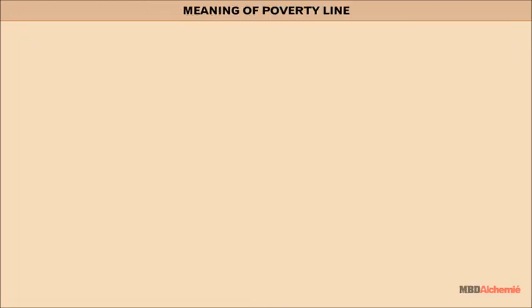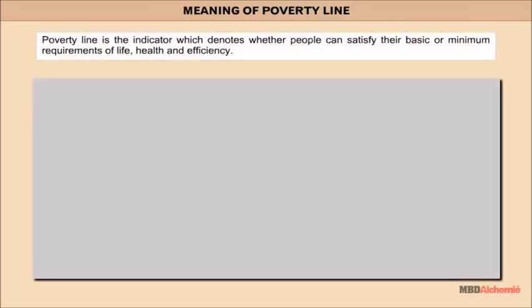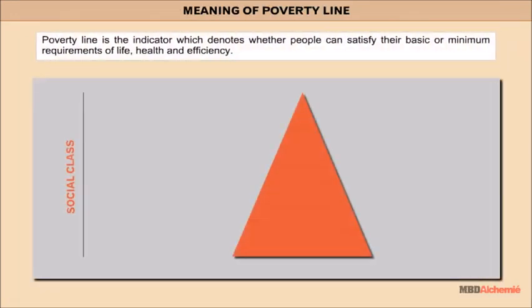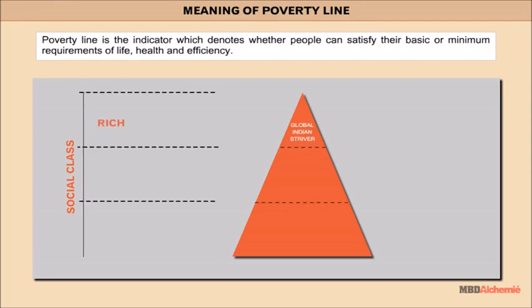Poverty line is the indicator which denotes whether people can satisfy their basic or minimum requirements of life, health and efficiency.